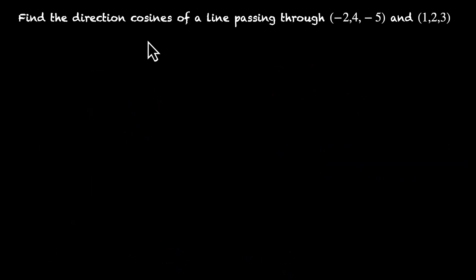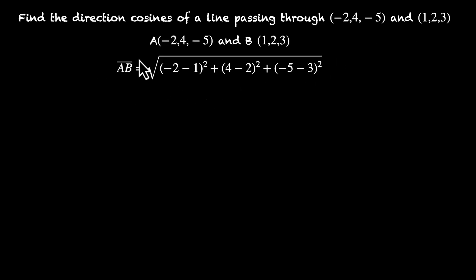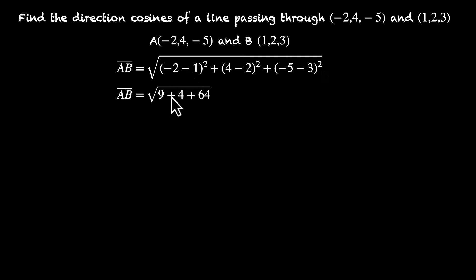Let's take an example: find direction cosines of a line passing through two given points. Let the points be A(−2, 4, −5) and B(1, 2, 3). The magnitude of AB = √((−2−1)² + (4−2)² + (−5−3)²) = √(9 + 4 + 64) = √77.